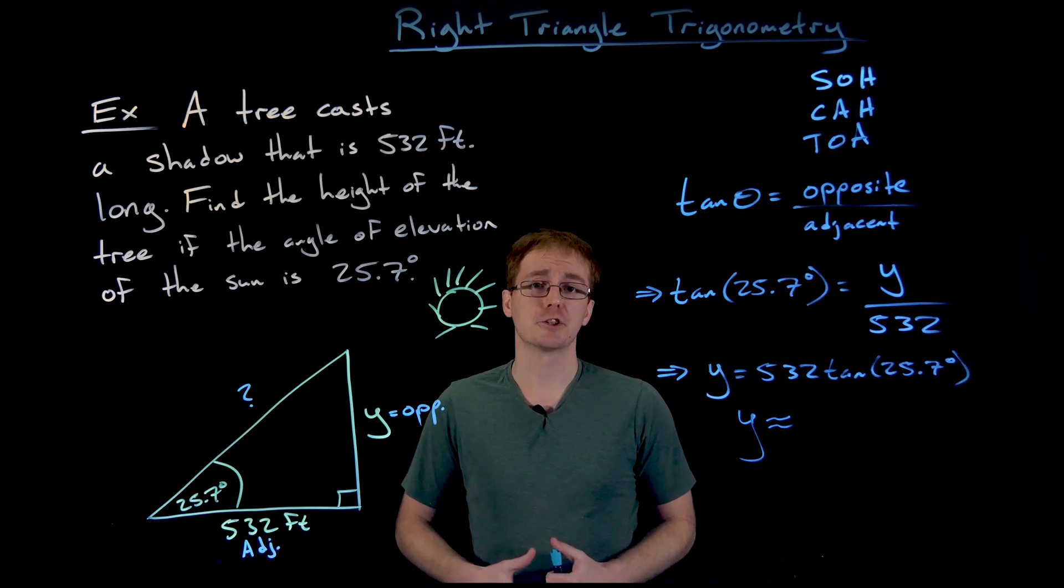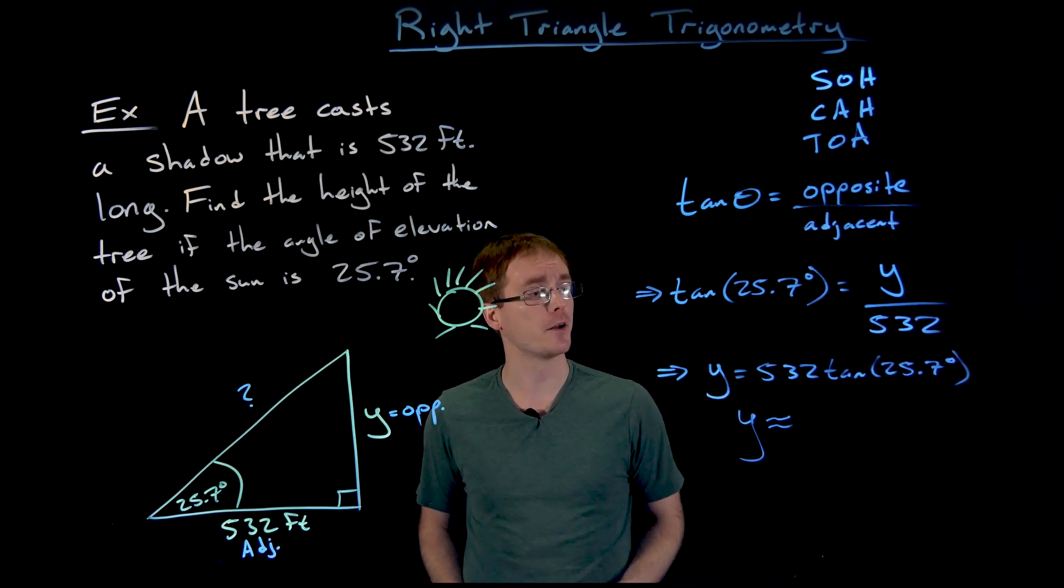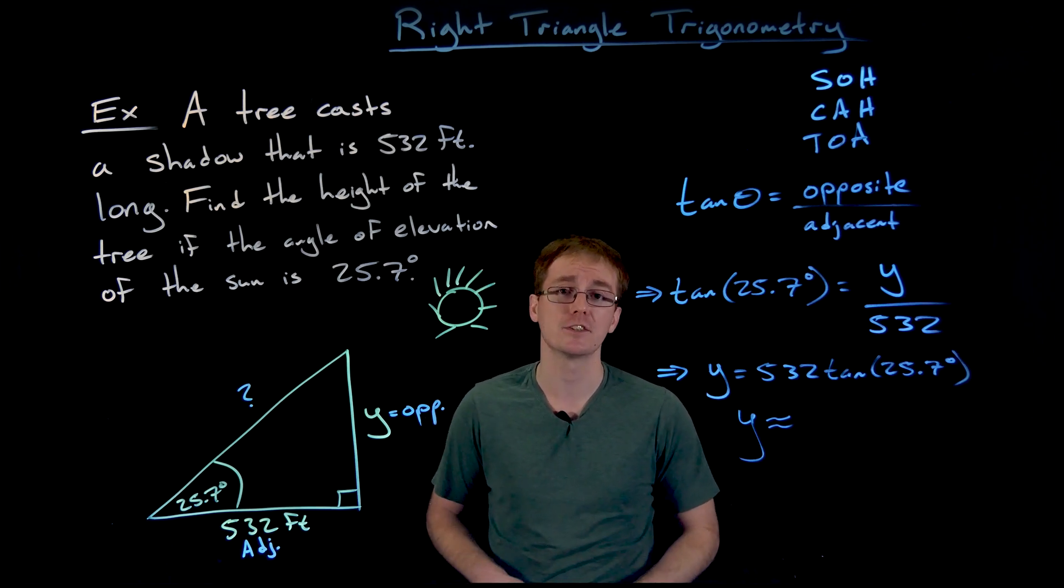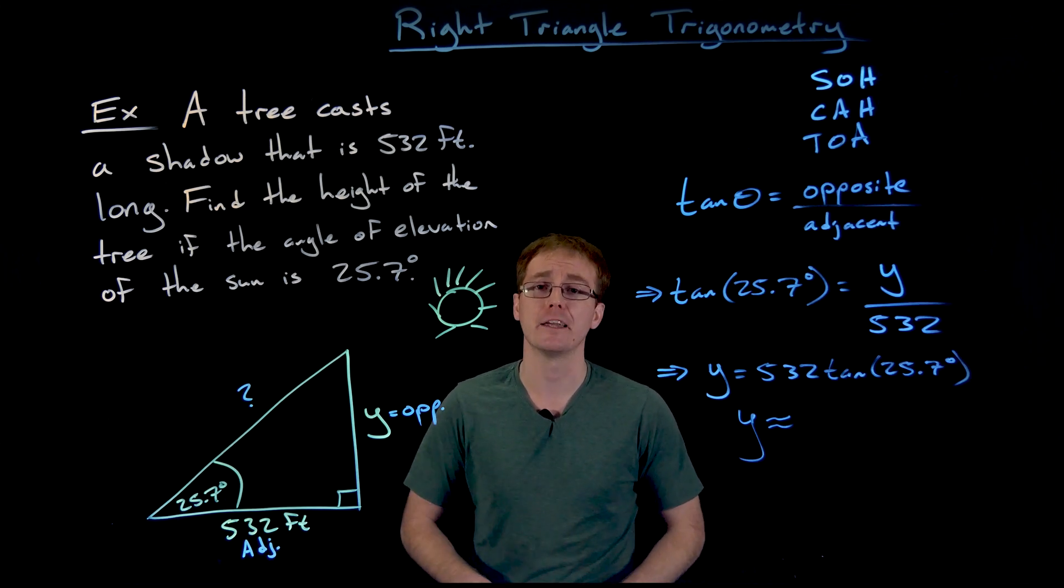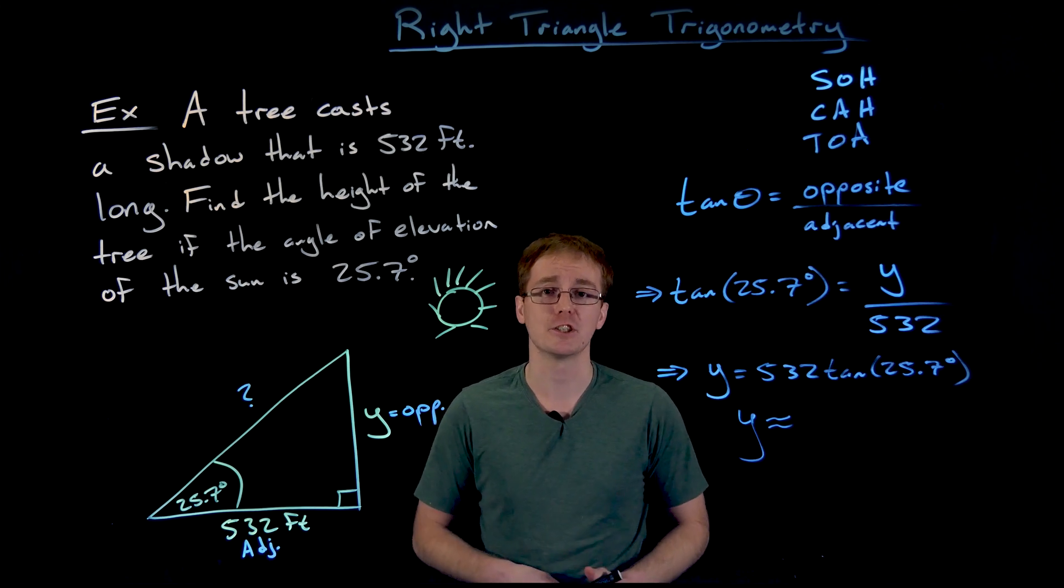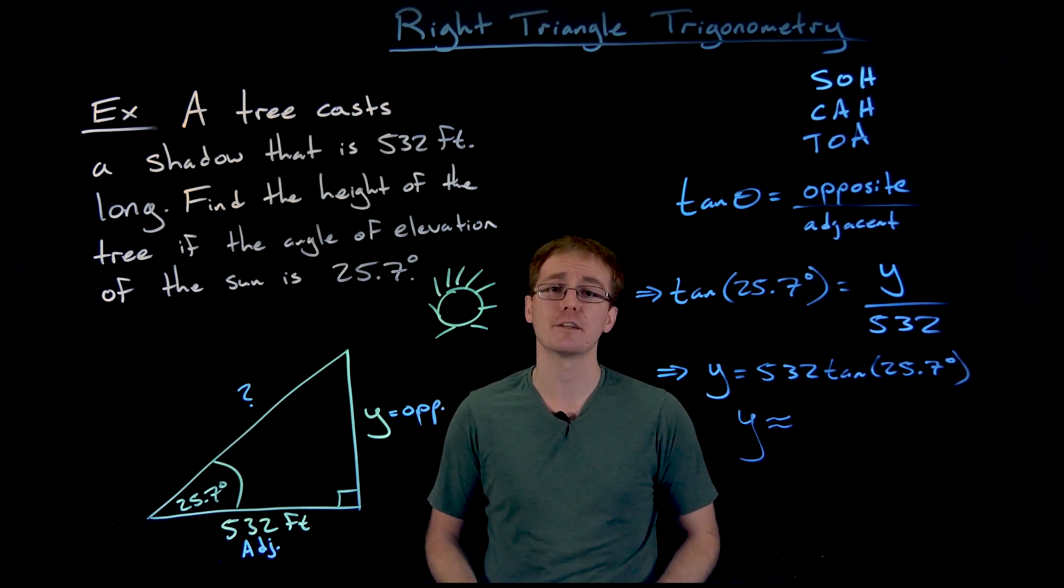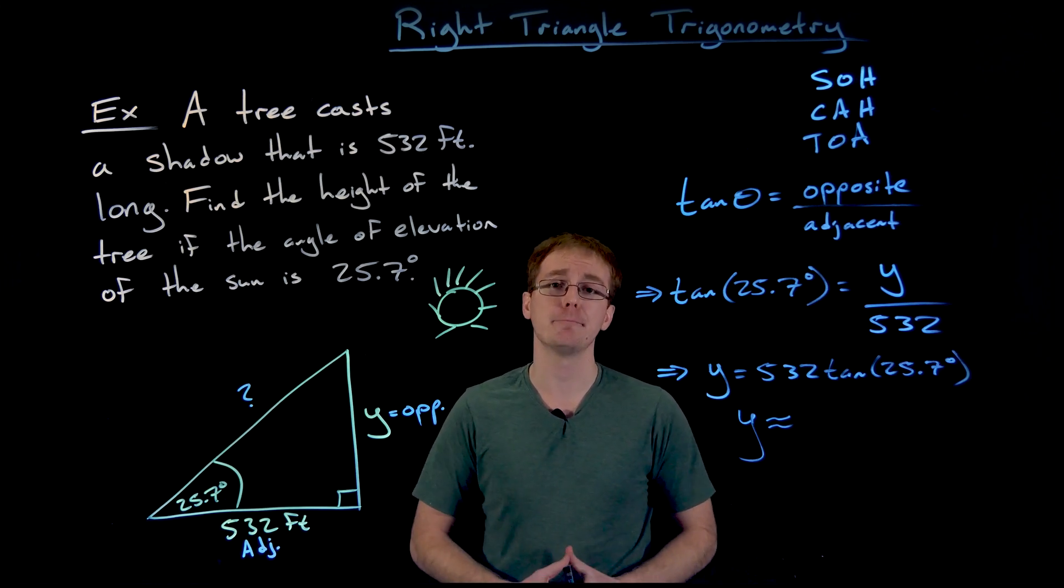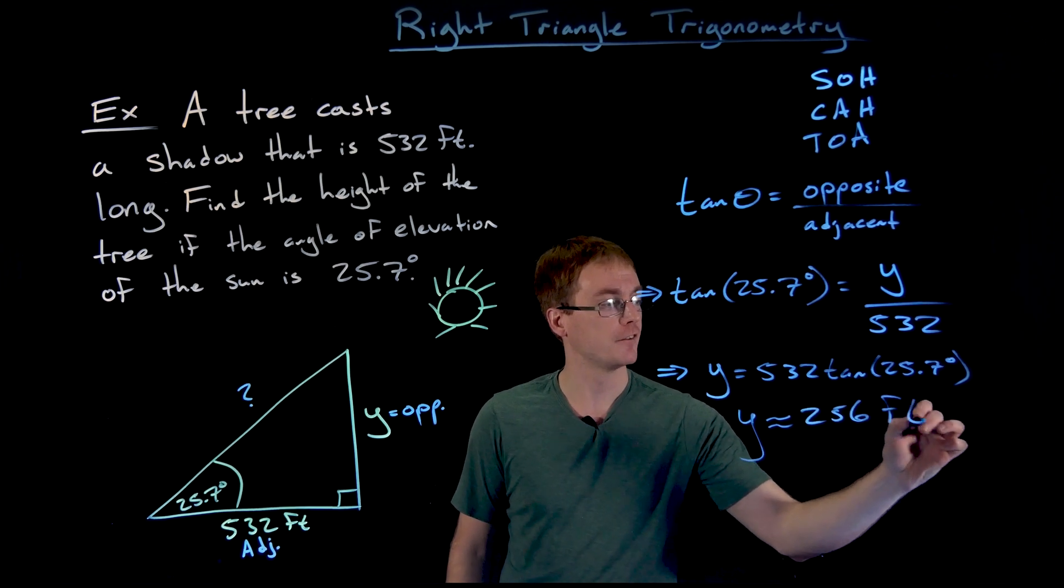However, if someone was paying you to measure this tree and they asked you, how tall is the tree? And you would respond to them, oh, the tree is about 532 times tangent of 25.7 degrees feet tall. They'd probably ask for their money back or just not pay you at all. So it would be more useful to give like a decimal approximation of this. And if we input 532 times tangent of 25.7 into our calculator, the value that we should get is approximately 256 feet.